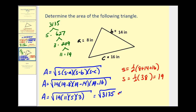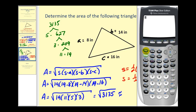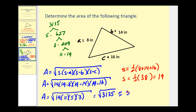So the best we can do is a decimal approximation. Using a calculator, the square root of three thousand one hundred thirty-five is approximately fifty-five point nine nine square inches. That's going to do it for this video — I hope you found it helpful.